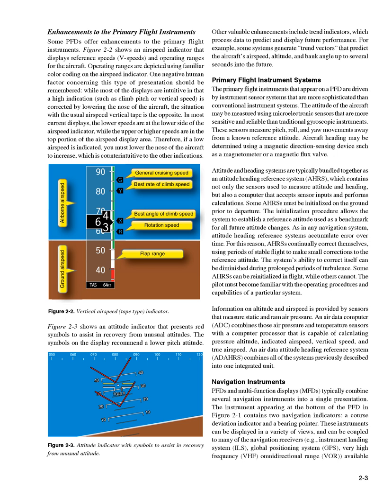Figure 2-3 shows an attitude indicator that presents red symbols to assist in recovery from unusual attitudes. The symbols on the display recommend a lower pitch attitude. Other valuable enhancements include trend indicators, which process data to predict and display future performance. For example, some systems generate trend vectors that predict the aircraft's airspeed, altitude, and bank angle up to several seconds into the future.